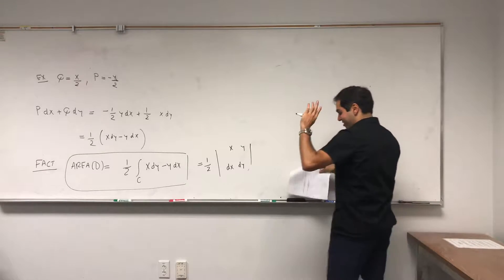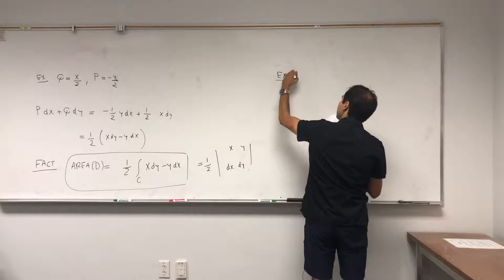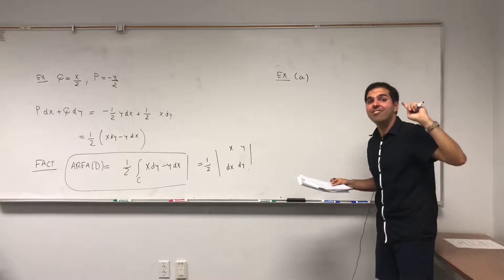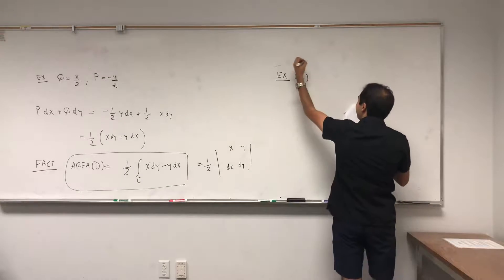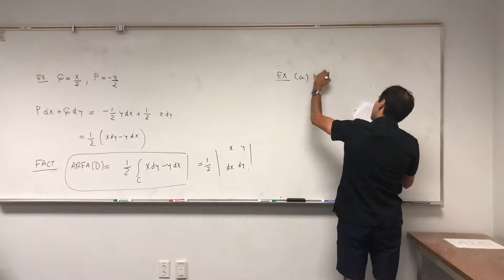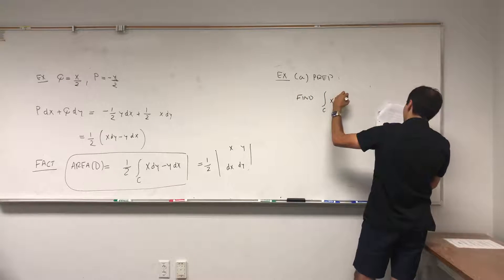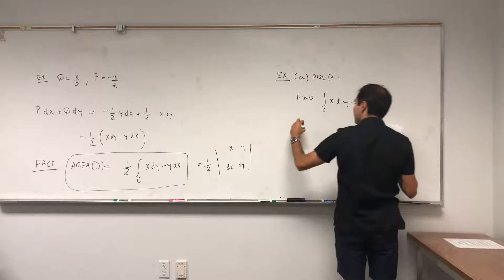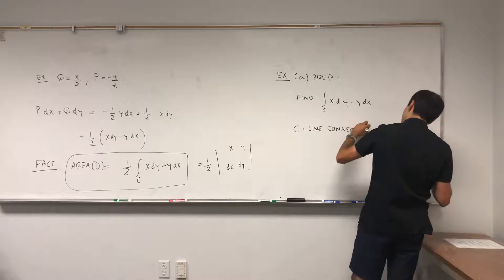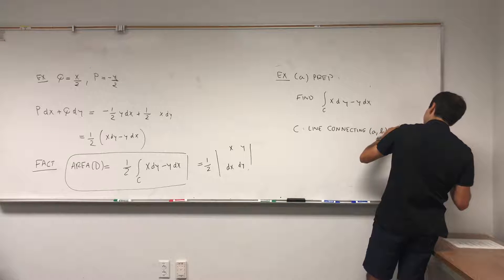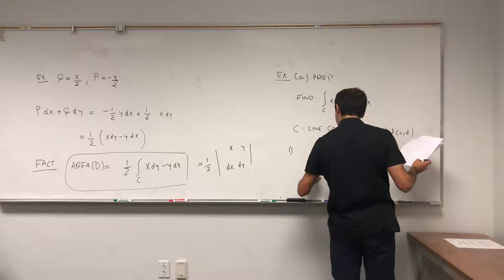Now let me tell you the amazing example. It has two parts — it's a bit long, but please watch till the end, because in the end everything just becomes 'oh my god.' So let's do the little prep. Let's find the line integral of x dy minus y dx, where C is just a line connecting two points.